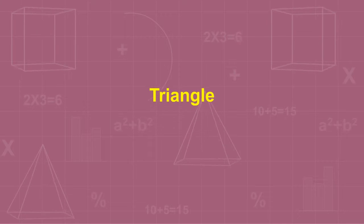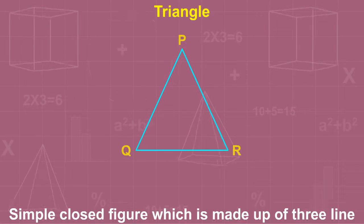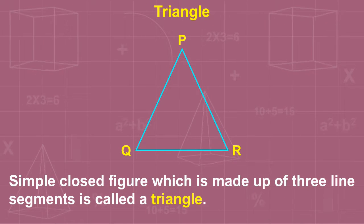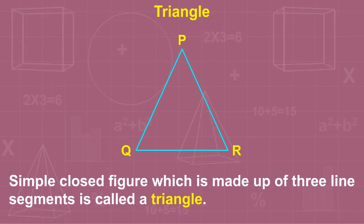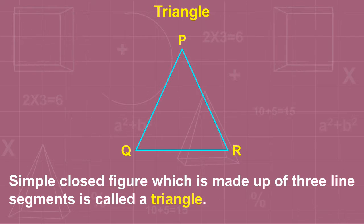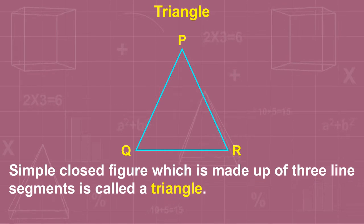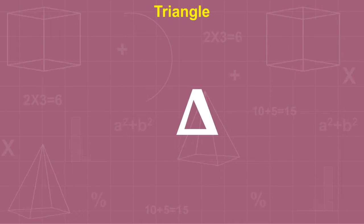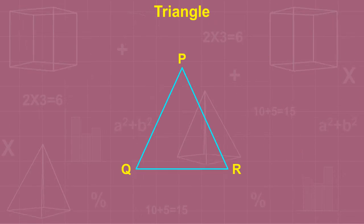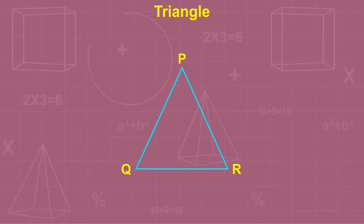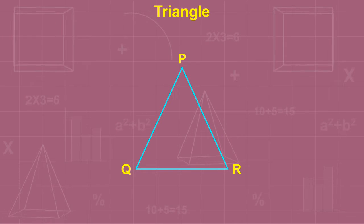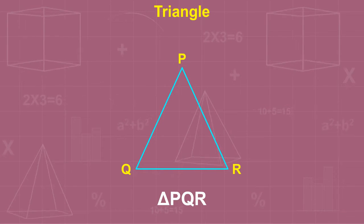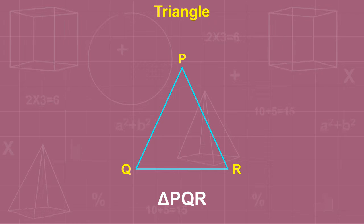A simple closed figure made up of three line segments is called a triangle. The symbol of a triangle is △. In the given figure, triangle PQR is denoted as △PQR.